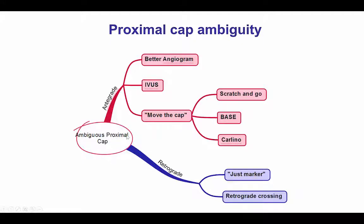When there is proximal cap ambiguity there are different ways to resolve it, including using different angiographic views to see if there is a knob or an entry point to the occlusion, using intravascular ultrasound if there is a large side branch close to the occlusion to elucidate the origin of the CTO, move-the-cap techniques in which a dissection is created through which a wire is advanced in the subintimal space, and retrograde crossing which can help either by crossing or by inserting a retrograde wire as a marker of the distal vessel position.